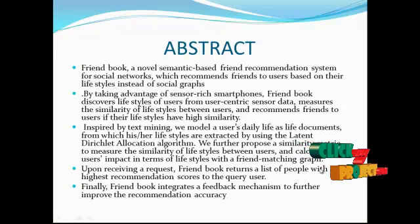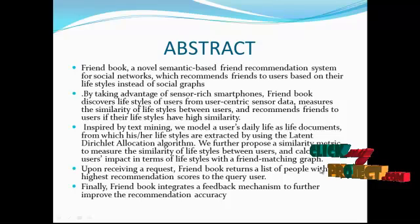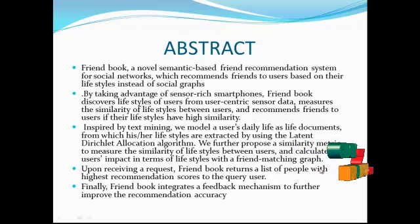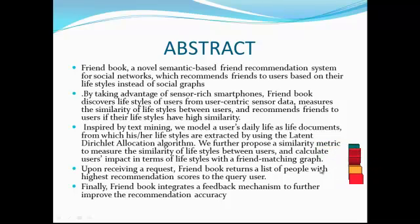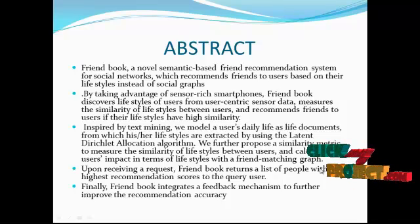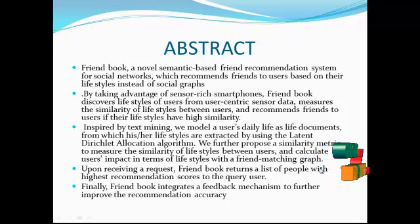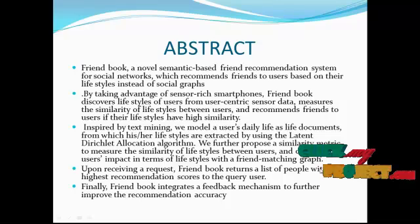In Friendbook, a novel semantic-based friend recommendation system for social networks, which recommends friends to users based on their lifestyles instead of the social graph. By taking advantage of sensor-rich smartphones, Friendbook discovers lifestyles of users from user-centric sensor data, measures the similarity of lifestyles between users, and recommends friends if their lifestyles have high similarity.